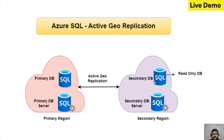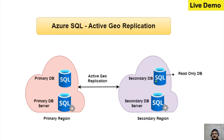As soon as you create an Active Geo Replication, whatever data we have in the primary database will be replicated to the secondary database. However, the secondary database is read-only — you cannot write anything on it, you can only fetch data. When you create Active Geo Replication, you need to create a secondary database server in another region, but it's not compulsory. You can also use the primary region as well, since this is a database-level feature.